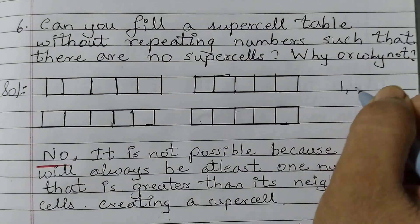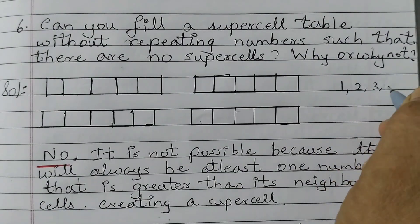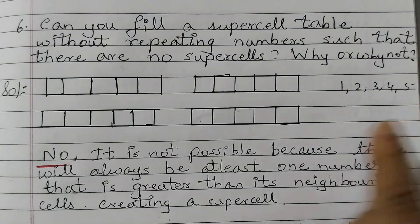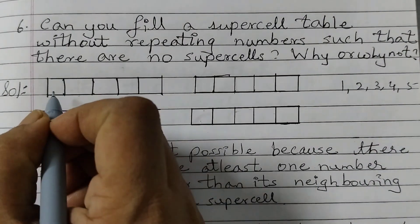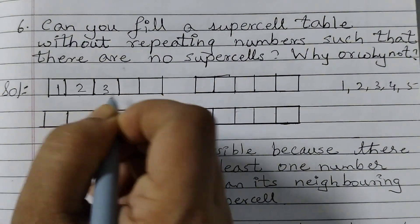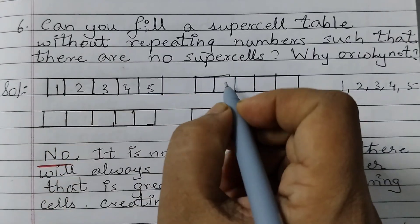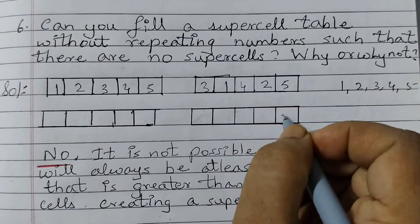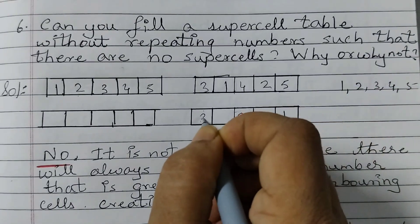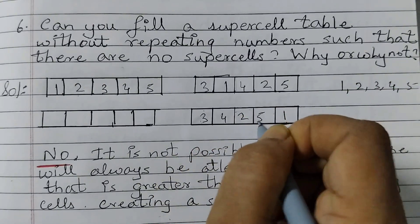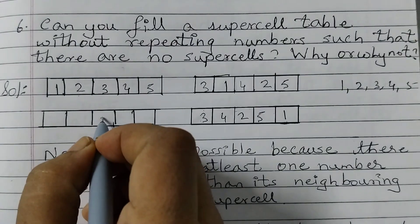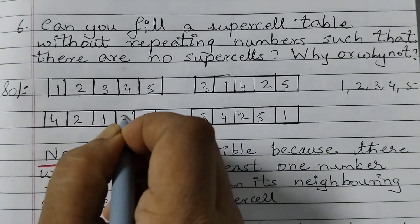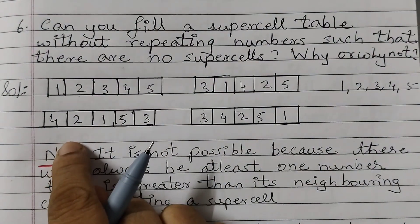Let's say we take the numbers 1, 2, 3, 4, 5. These 5 numbers and I'll arrange them randomly. So let's say 1, 2, 3, 4, 5 in each row. I just filled it up randomly.